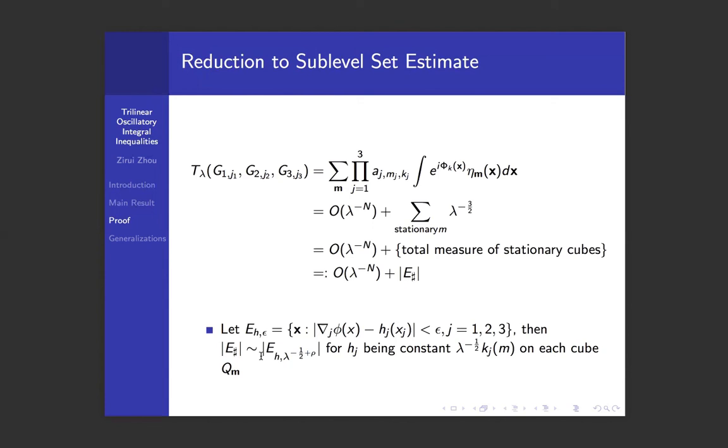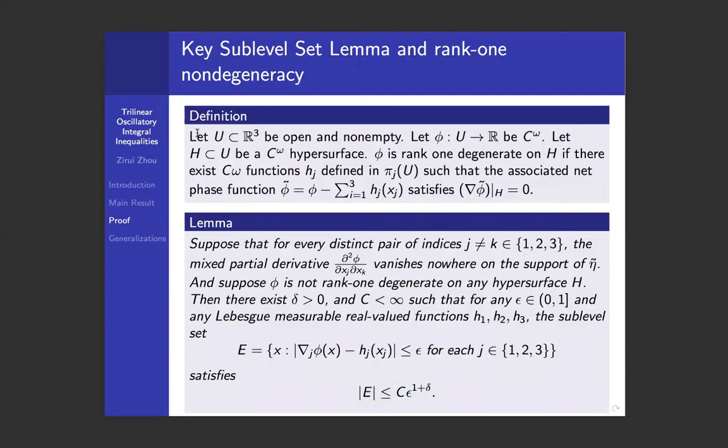So now we've finally reduced to a sublevel set estimate. Here I wrote down the definition for rank one non-degeneracy again to compare it to the lemma here. So the sublevel set estimate lemma says that if our φ is rank one non-degenerate and if we have uniform lower bound for the mixed second order derivatives of φ, then this sublevel set E has measure bounded by O(ε^(1+δ)).